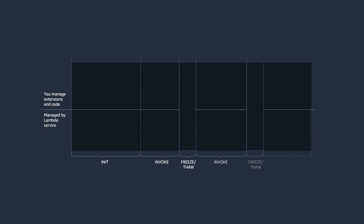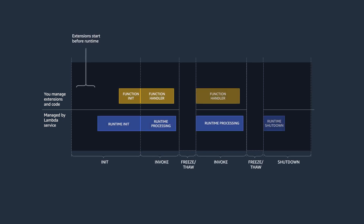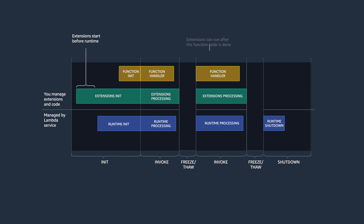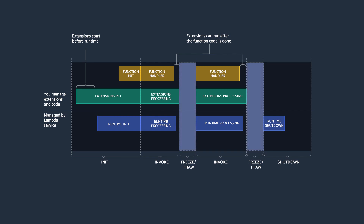Let's take a closer look at how extensions can run during all phases of the Lambda lifecycle: Initialization, Invoke, and Shutdown. First, extensions can run before the function because the Lambda service starts extensions before the runtime and the function. Second, during the Invoke phase, extensions can run logic in parallel to the function and can also choose to run after the function code is done. Extensions can use this time for things like sending out data collected during the Invoke. The Lambda service freezes the environment when the runtime and all extensions are done, and in this way, extensions can influence the freeze and thaw behavior.